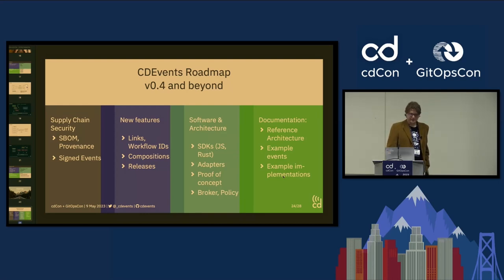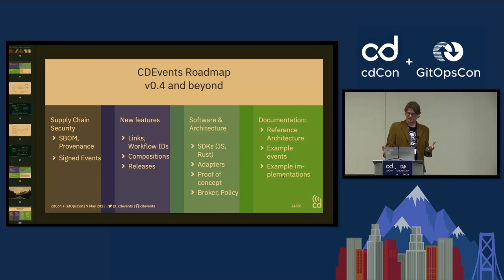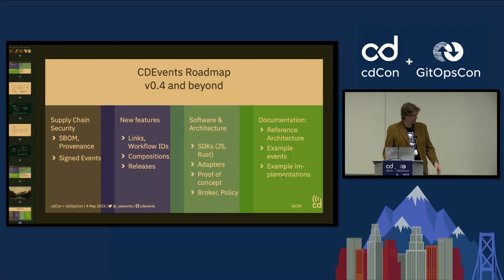We're also discussing compositions. Today the data model has simplified assumptions to get started — like modeling a deployment as a deployment of one artifact — but we want the ability to model a deployment of a composition of artifacts, composing the existing data model into more complex structures. There's also plenty of work to do in documentation, examples, and proofs of concept.